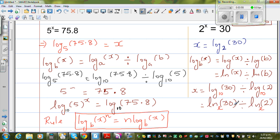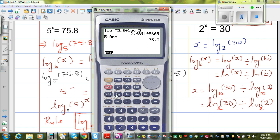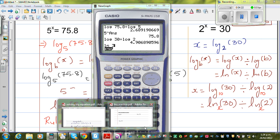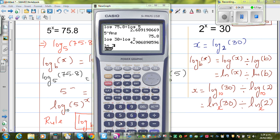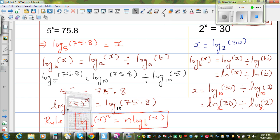Let's use a calculator. Press log 30 divided by log 2, that would be 4.9. Or you can also press natural log of 30 divided by natural log of 2, which will give you the same number. So the answer is x is 4.9 in one decimal place.